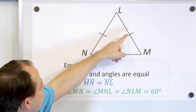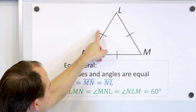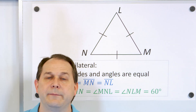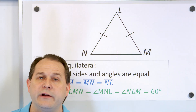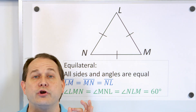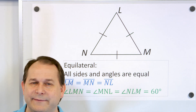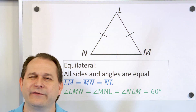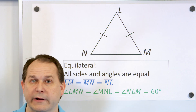These little marks drawn through the sides — there's a mark here, a mark here, and a mark here — those mean that the sides with the markings on them are all congruent. When we say things are really equal, we say that they're congruent.